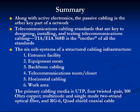In summary, we discussed that along with active electronics, the passive cabling is the other key part of the network. Telecommunications cabling standards are the key to designing, installing, and testing telecommunications cabling, and TIA-EIA 568B is the mother of all the standards. The six subsystems of a structured cabling infrastructure include the entrance facility, equipment room, backbone cabling, telecommunication room, horizontal cabling, and finally the work area. And lastly, the primary cabling media is unshielded twisted pair four twisted pair 100-ohm copper, multimode and single-mode two-strand optical fiber, and RG6 quad shield coax cable. This completes Module 1. Please take Quiz 1 and I'll see you in Module 2.